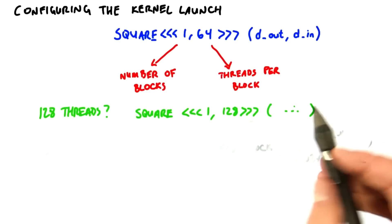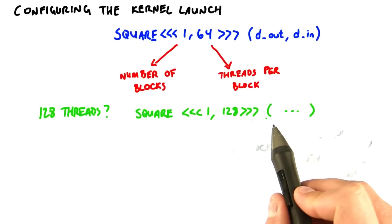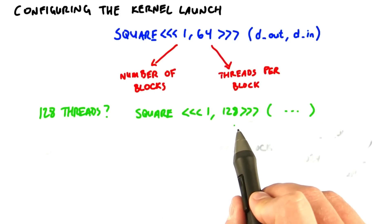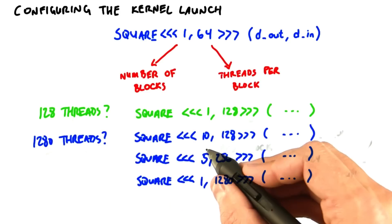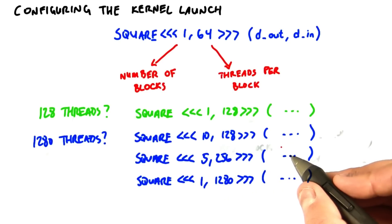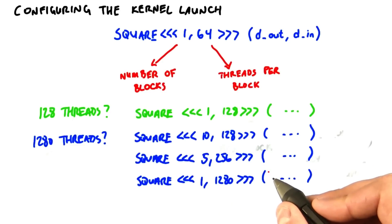So if we wanted to launch 128 threads and square the values in each of them instead of 64 threads, we could change this call to square of 1,128. If we wanted to launch 1280 threads instead, we could call square of 10,128, launching 10 blocks of 128 threads each. Or square 5,256, we're launching 5 blocks of 256 threads each.